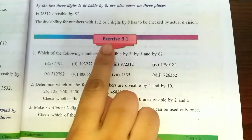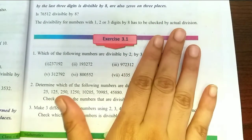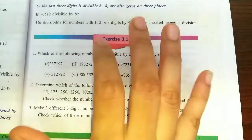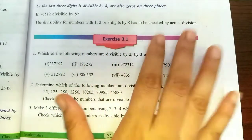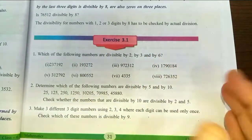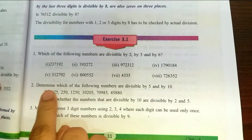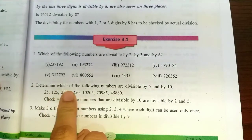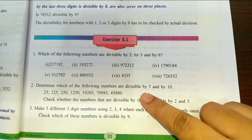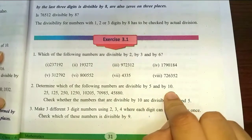Now I will show you exercise 3.1. So, the second problem: determine which of the following numbers are divisible by 5 and by 10.